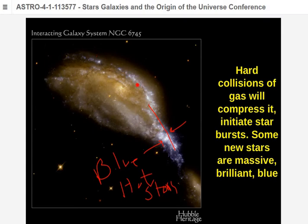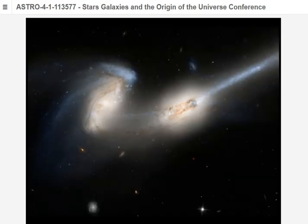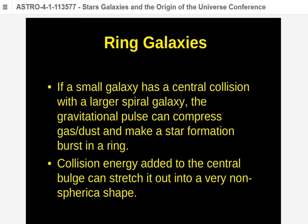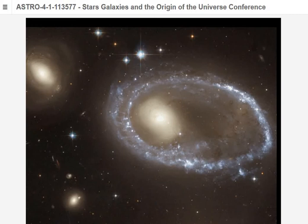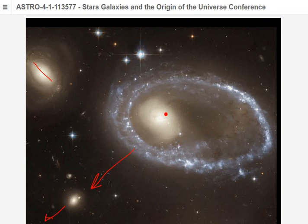These are starbursts triggered by the close passage of the galaxies. Another example: blue tidal tails lit up by massive hot stars. Ring galaxies are like the shells we talked about — evidence of a central collision. Sometimes galaxies come in, go back out, come back in, and gradually mush together, becoming one galaxy.